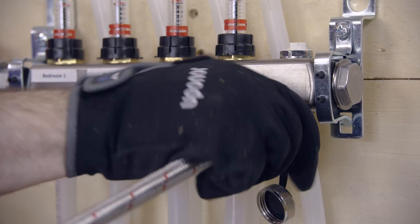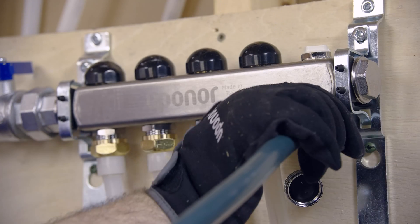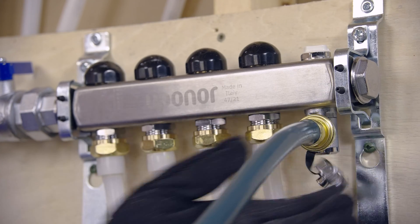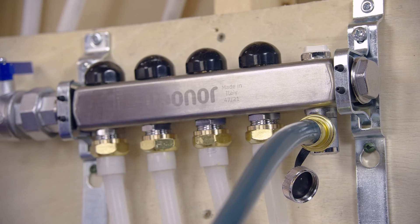First, hook up the supply hose to one of the manifolds. You should also attach the drain hose to the other manifold. These knobs on the top of the manifold control the flow of water to the individual loops. Start with each of these in the closed position.